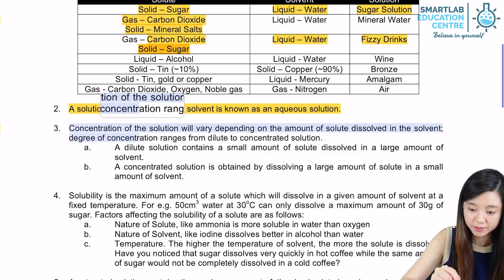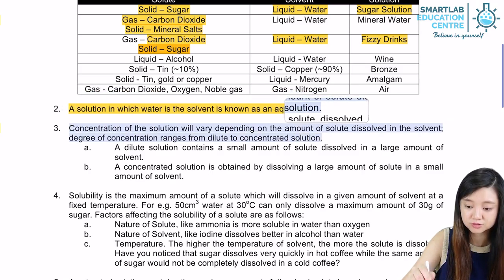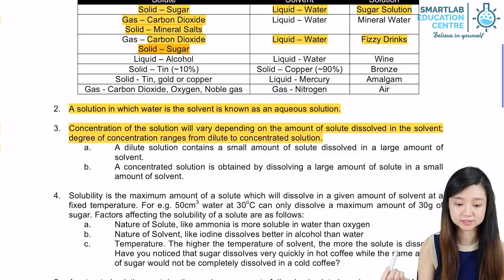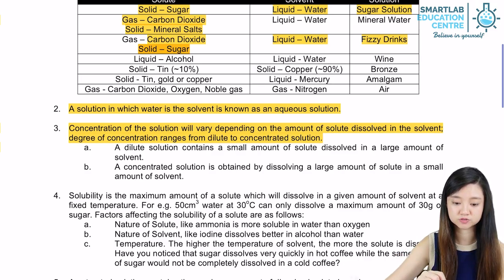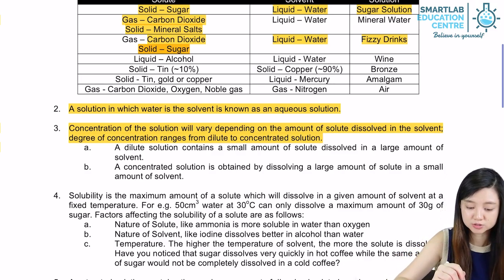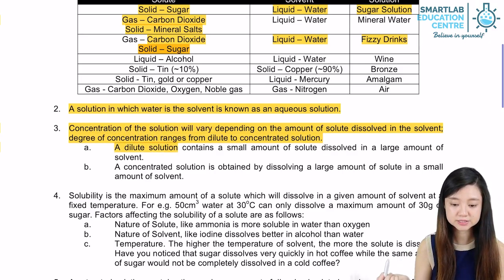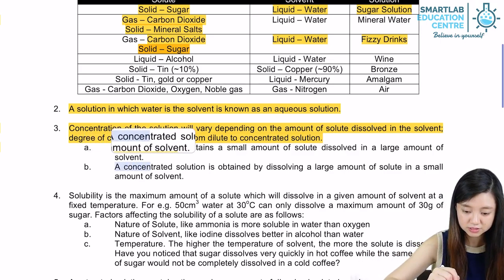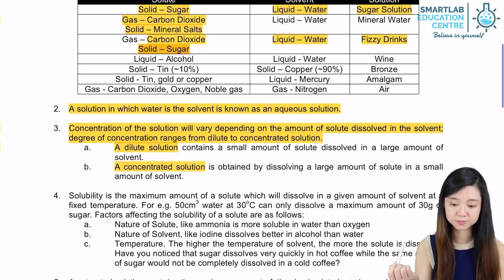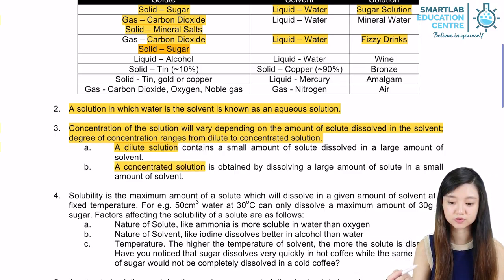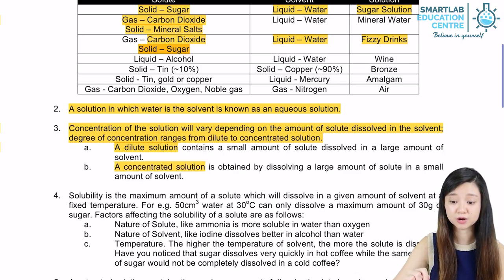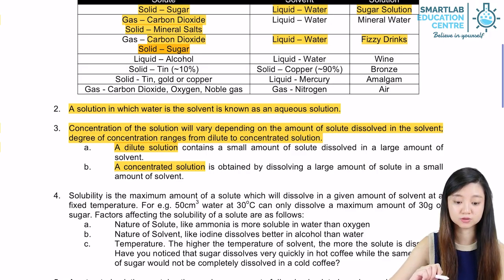The concentration of a solution will vary depending on the amount of solute dissolved in the solvent, and the degree of concentration will range from a dilute to a concentrated solution. A dilute solution means a small amount of solute is dissolved in a large amount of solvent, while a concentrated solution means a large amount of solute is dissolved in a small amount of solvent.